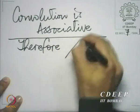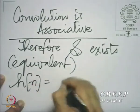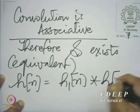We have concluded that convolution is associative, and that answers our first question. The more general conclusion is that convolution is associative. Its implication for LSI systems is that S indeed exists — the equivalent system exists — and that equivalent system has impulse response H1 convolved with H2.